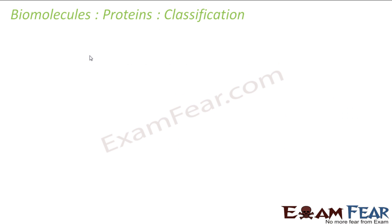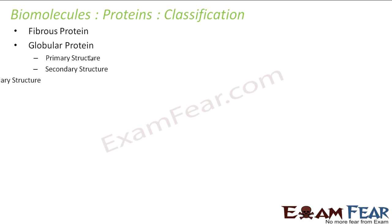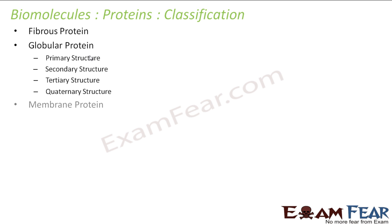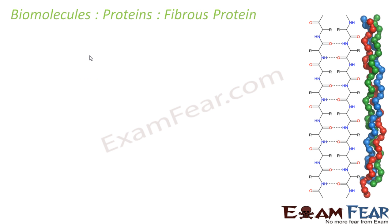Let's understand the classification of proteins. Proteins are classified as fibrous proteins and globular proteins. In globular protein we have primary structure, secondary structure, tertiary structure, and quaternary structure. We also have membrane protein, which we will not discuss. We will discuss more of fibrous protein and globular protein. So let's start with fibrous protein.